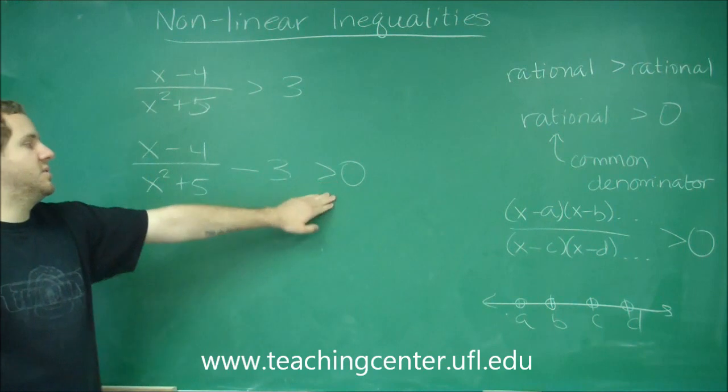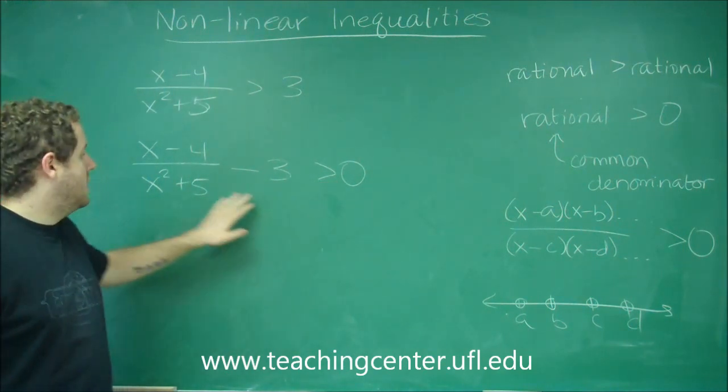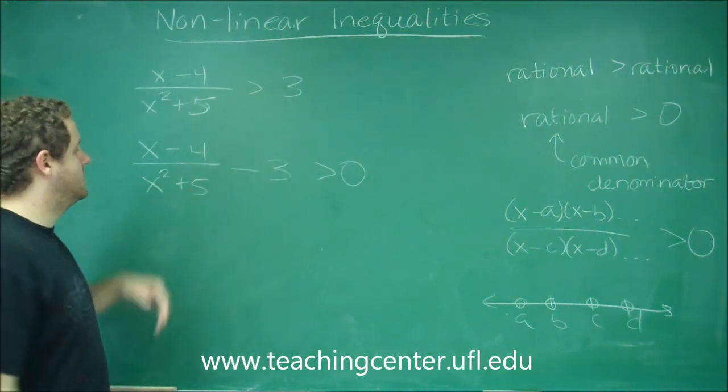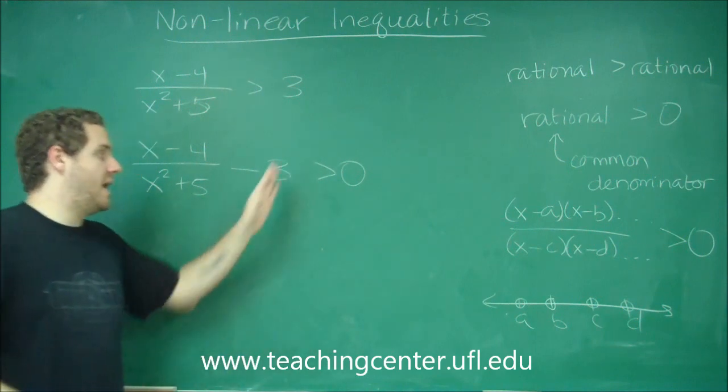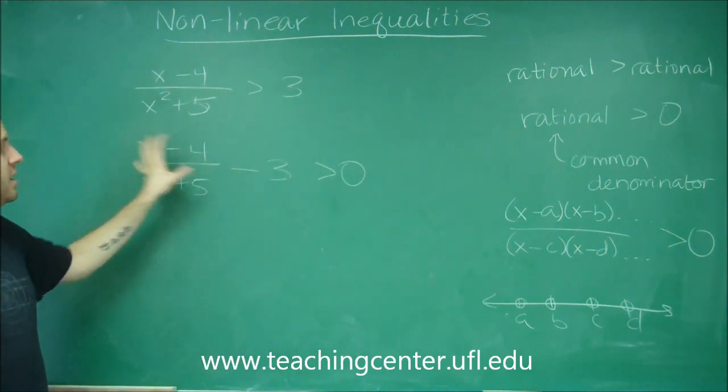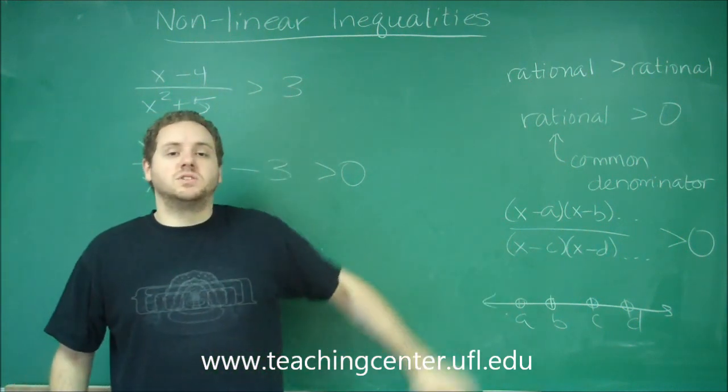We get one side equals zero. That's exactly what we want. In order to combine these, you'd have to get a common denominator, so you'd have to multiply this one by x squared plus five over x squared plus five, put them together, and then approach this the same way.